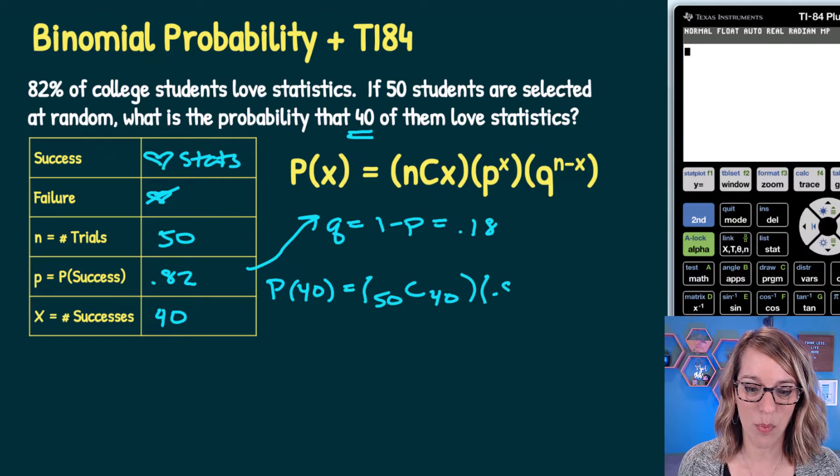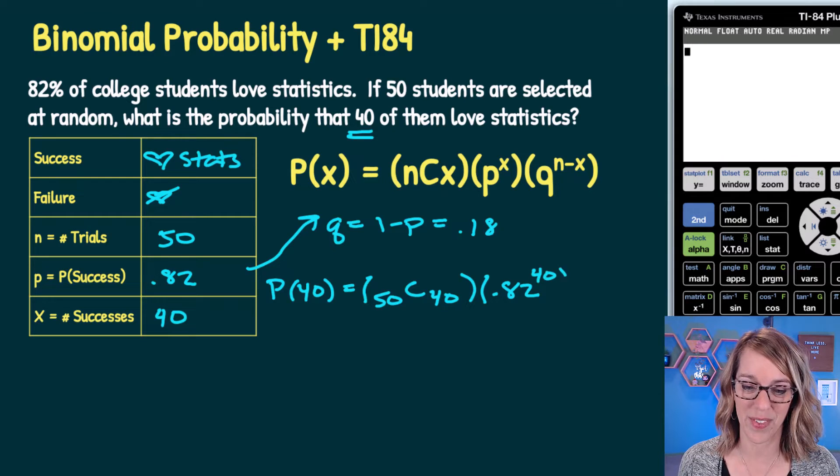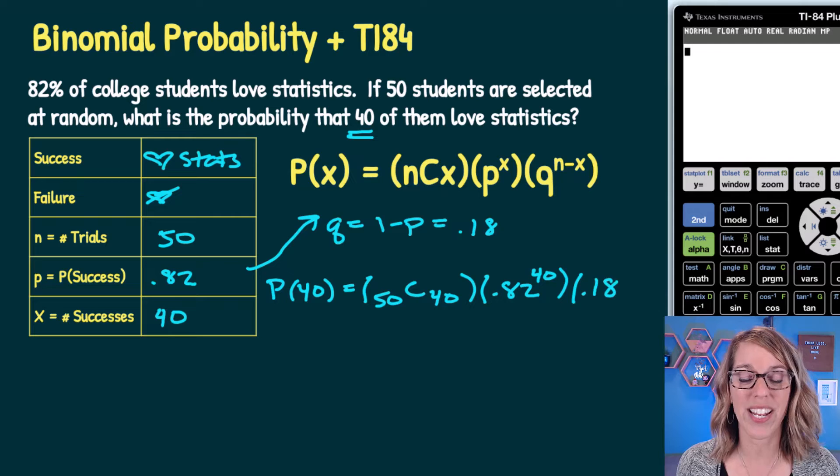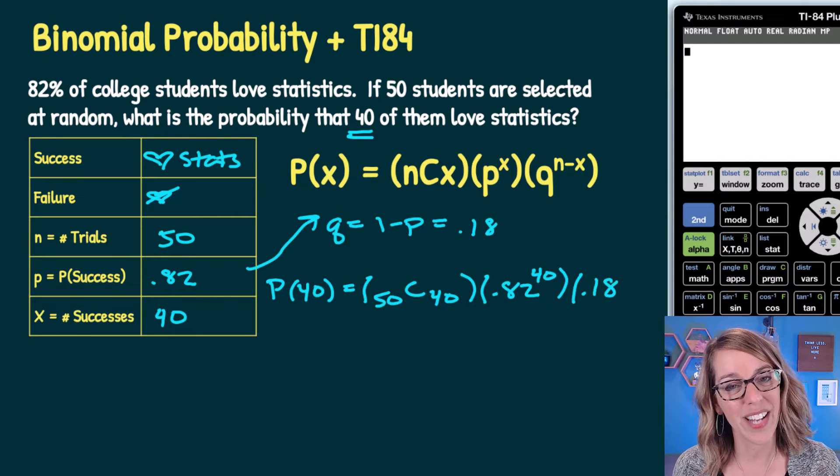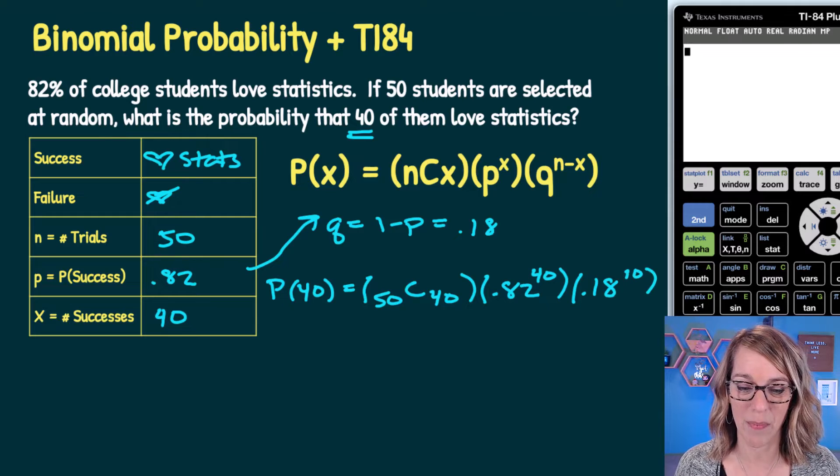times P to the 40th power, which is 0.82^40, times Q to the n-x power, which is 0.18^10. If 40 love stats, that means 10 don't.